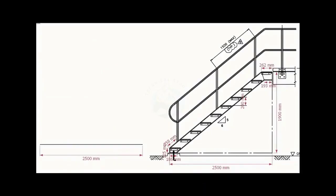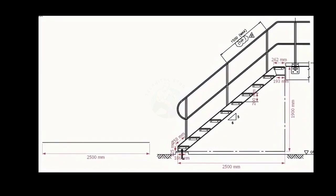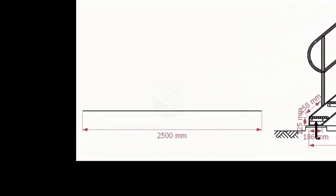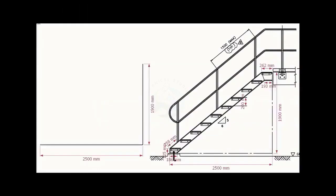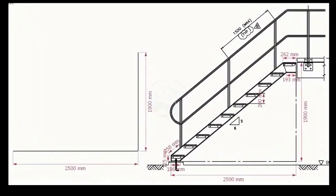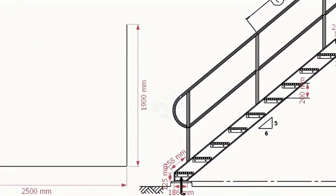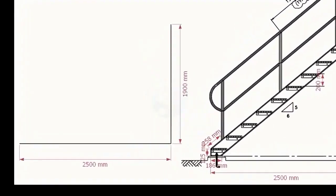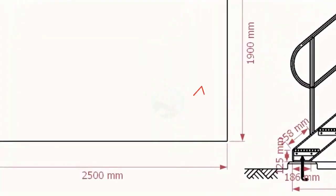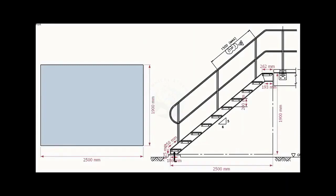Let us start a layout on a leveled plate or a platform. Draw the bottom length 2500 millimeters. Draw the width 1900 millimeters. Make sure the included angle is 90 degrees. Let us complete the rectangle.